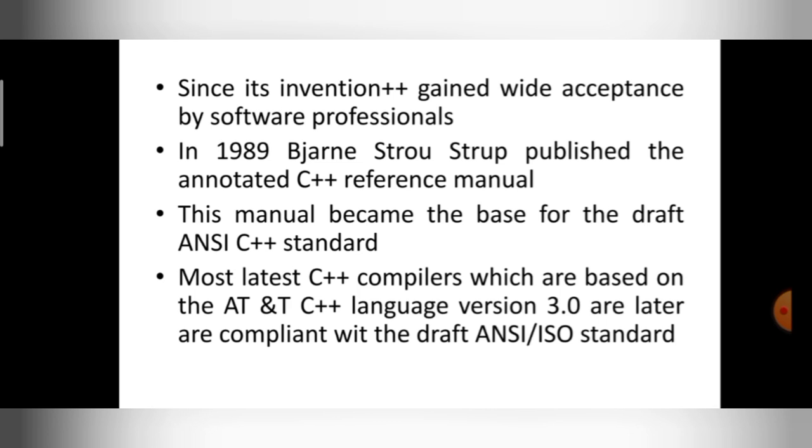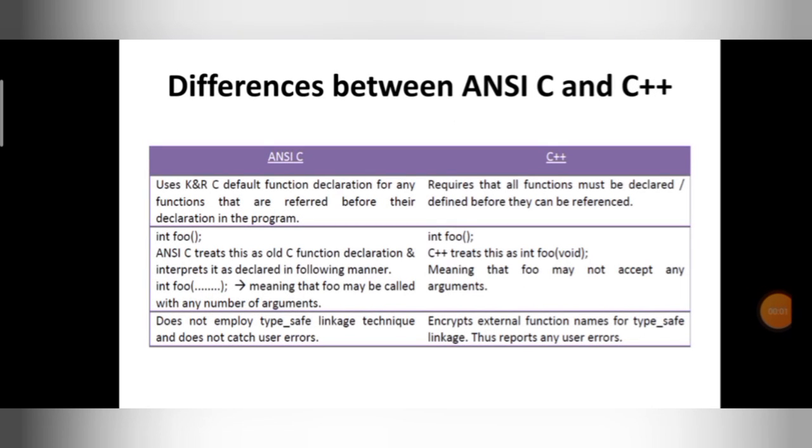Whatever the C++ compilers we are using today are based on AT&T language version 3.0 or later. These compilers are compliant to this ANSI/ISO standard. So this manual is the base for that. Next, differences. I will take the differences one by one. In ANSI C, ANSI C uses K&R C default function declaration.